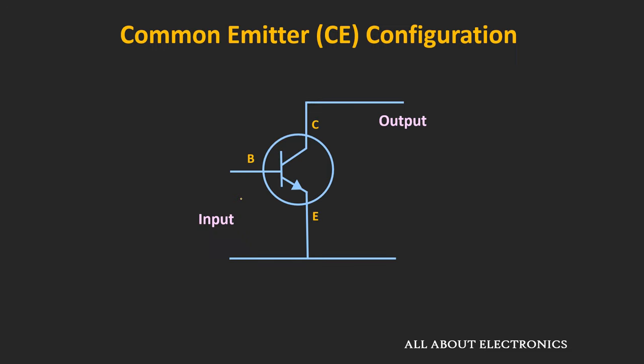In this configuration, the emitter terminal is common between the input and the output side. That means the input is applied between the base and the emitter terminal, and the output is measured between the collector and the emitter terminal.